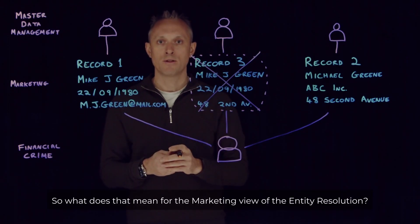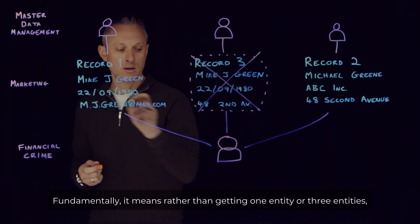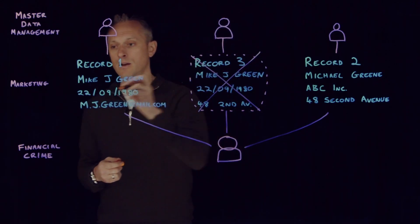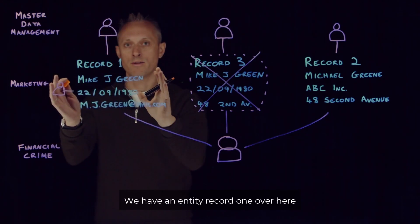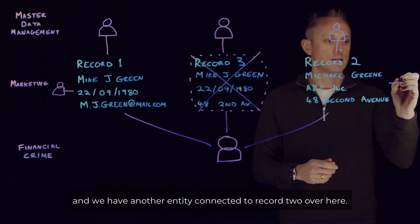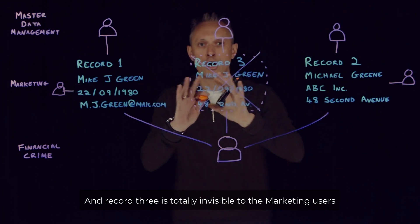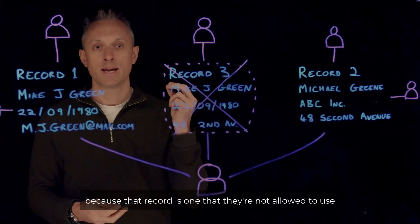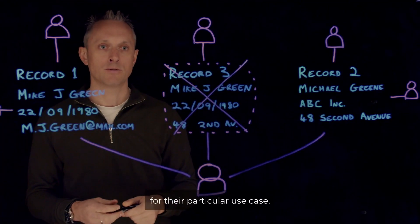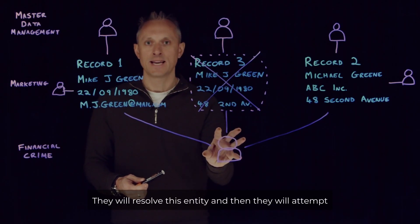So what does that mean for the marketing view of the entity resolution? Fundamentally, it means rather than getting one entity or three entities, we in fact end up with two. We have an entity — record one over here — and we have another entity connected to record two over here. Record three is totally invisible to the marketing users because that record is one they're not allowed to use for their particular use case. The way other systems attempt to solve this is via something called data masking: they resolve the entity and then attempt to scrub out the data that each user or use case cannot access.